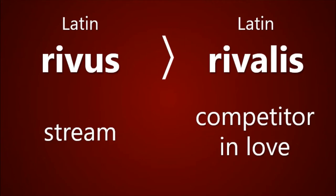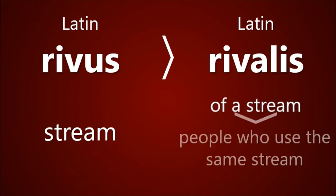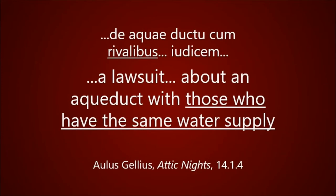Here's the step-by-step process. Rivalis started off as the adjective derived from rivus, so it meant "of a stream." Then, in the plural, it became a noun referring to people who use the same stream as their source of water. And, it turns out, a lot of disputes arose when people used the same water supply. For example, the Roman author Aulus Gellius refers to a lawsuit between people who use the same water supply, using that Latin word rivalis.